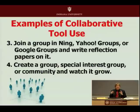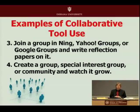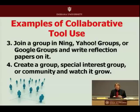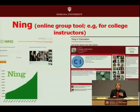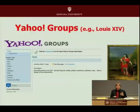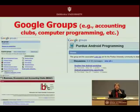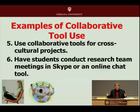Brainstorm in a wiki, then make those divergent ideas convergent — maybe using Google Documents to report findings, having students highlight, tag, and use sticky notes in Diigo for social bookmarking, or share bookmarks in Delicious. Perhaps have them go to Yahoo Groups, Ning, or Google Groups to form a group that shares a calendar, shares documents, has discussions, and so forth. Or have them join existing groups — for example, a Ning group for education, or a Yahoo Group for history or a Google Group for accounting.